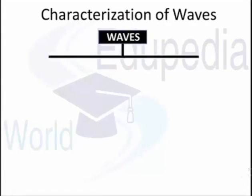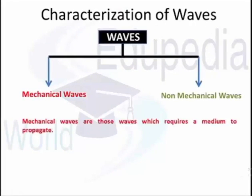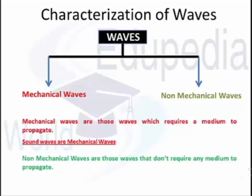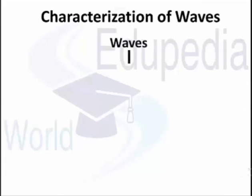Waves are characterized in many ways. One way is in terms of mechanical and non-mechanical waves. Mechanical waves require a medium — sound is an example, because air molecules vibrate and transfer those vibrations; without air, in a vacuum, sound cannot propagate. Non-mechanical waves don't require a medium — light travels from the Sun to us through empty space, proving it needs no medium.